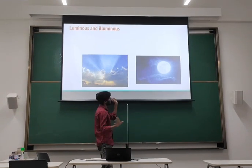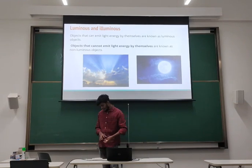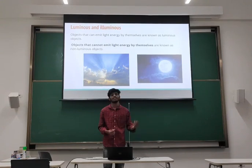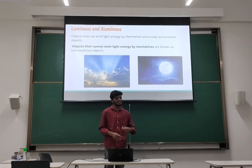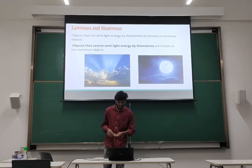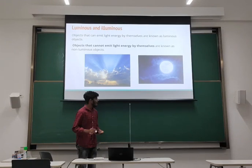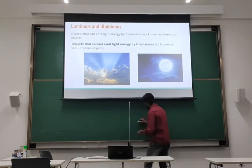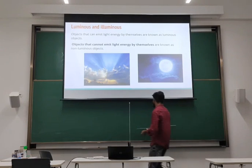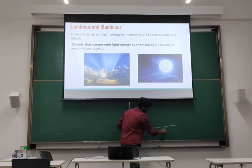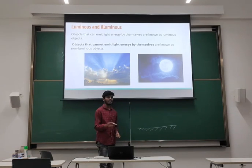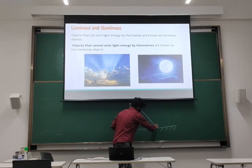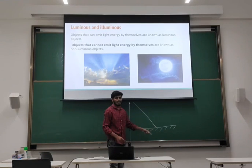These are some examples of luminous and non-luminous properties. Now let's talk about reflection of light. We are able to see the images because of reflection of light, and that is how the laws of reflection come into place. The law of reflection says — let me draw a picture. Let's imagine that this is a plane mirror. I am shining a light — for example, a torch or laser — onto the plane mirror.